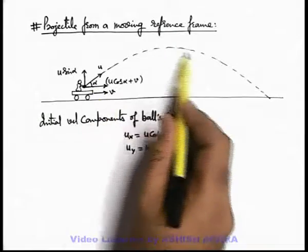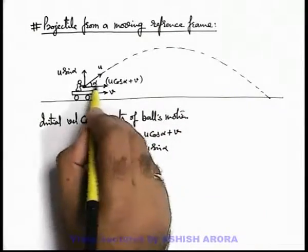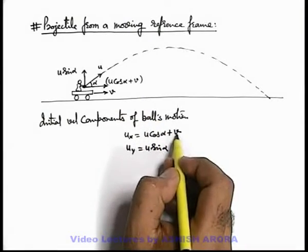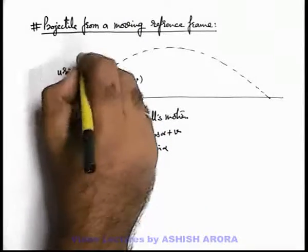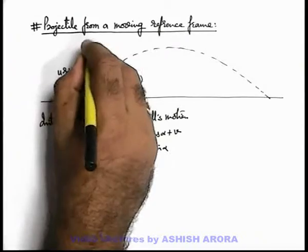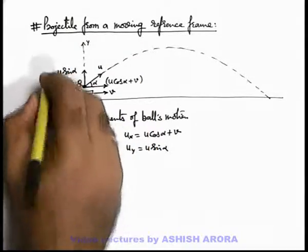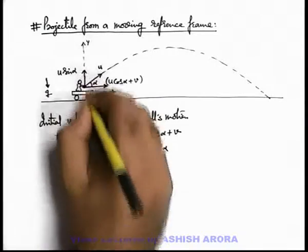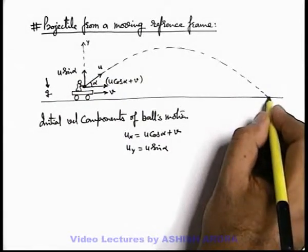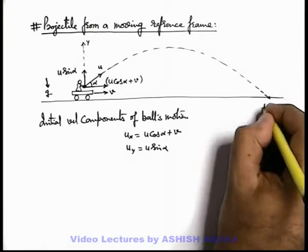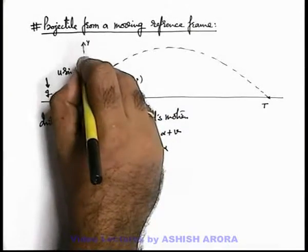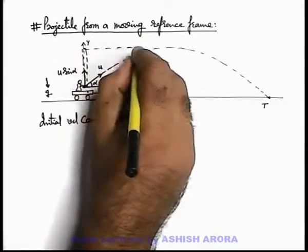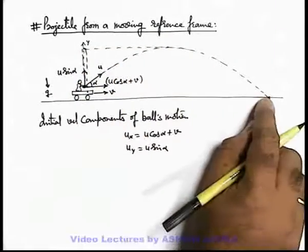During this motion, the ball continues to move with constant velocity u cos alpha plus v — that is ux — in the x direction. In the y direction it is moving with velocity u sin alpha and is retarded by g. The total time of flight can be calculated from its vertical direction motion, and that time of flight can be used for calculation of the range of the projectile.